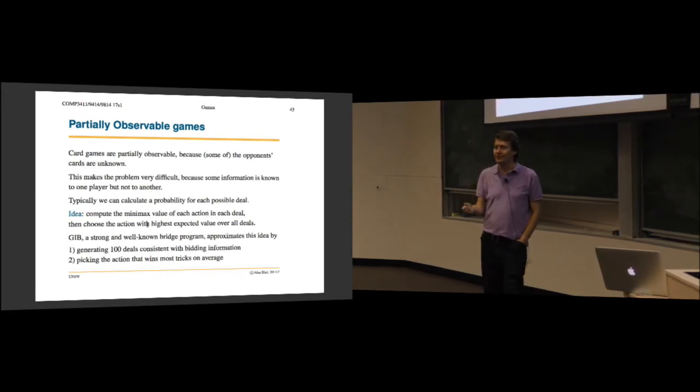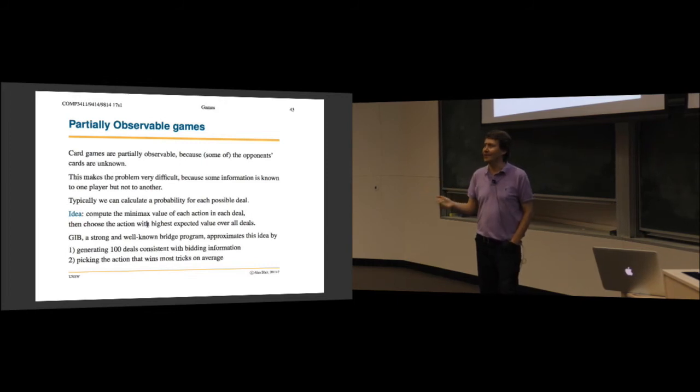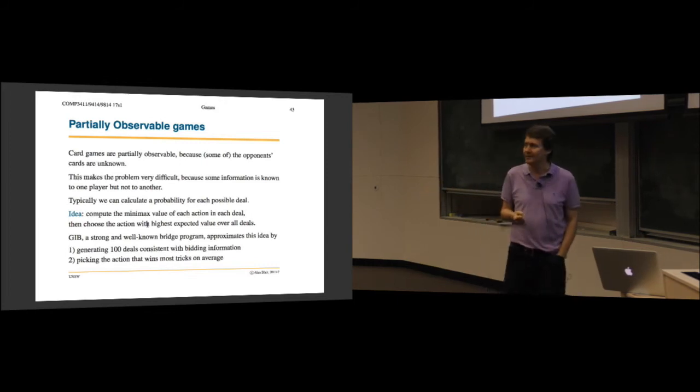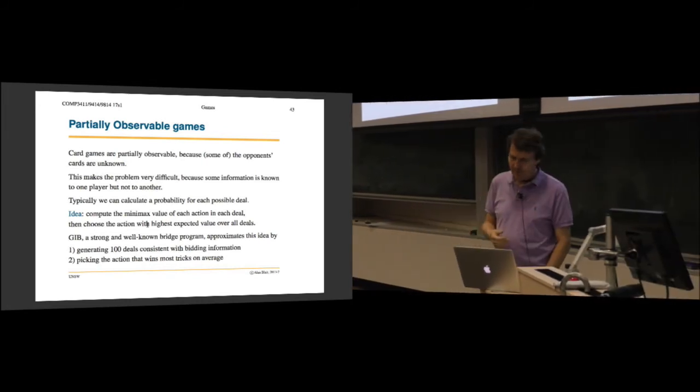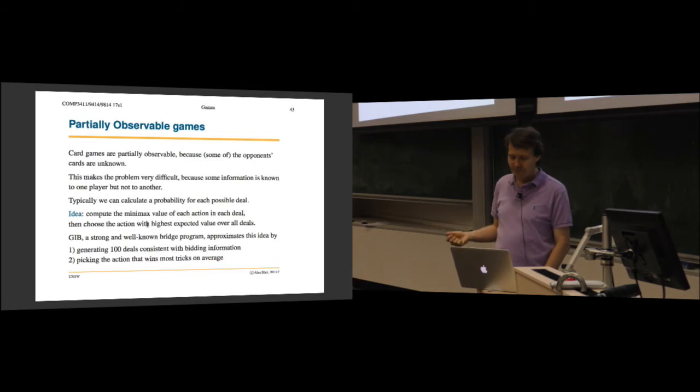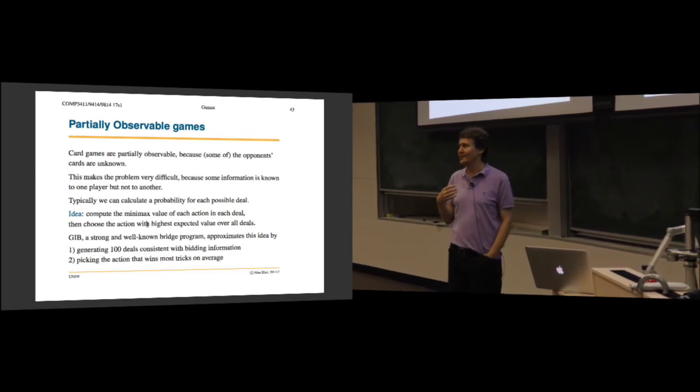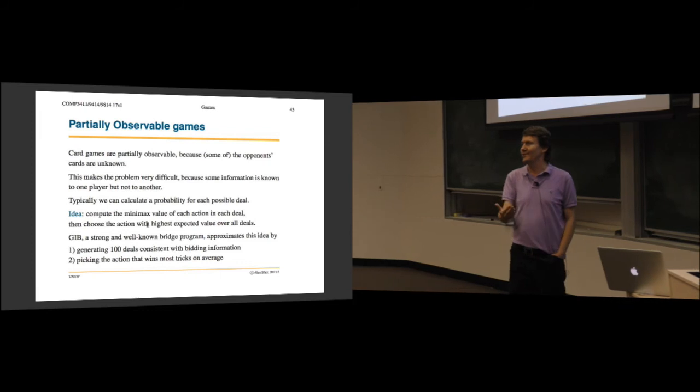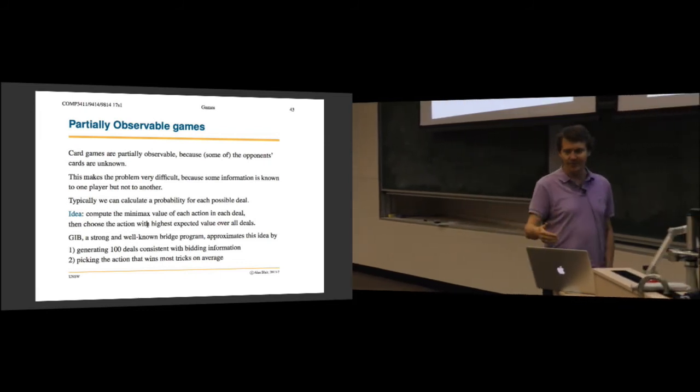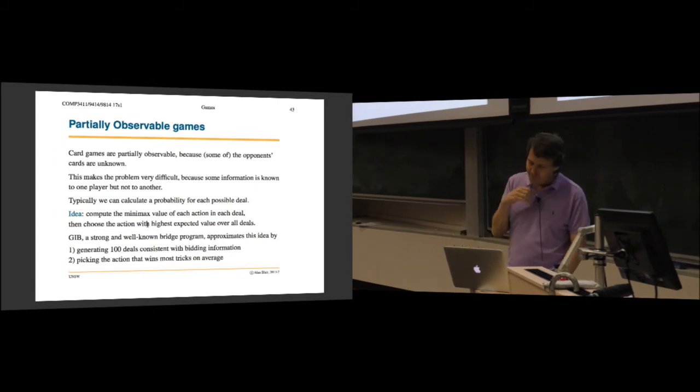There was a program called GIB, which for many years was the best bridge-playing program. And the way it worked was as follows. It has information about what bids people have made and what cards people have already played. And on that basis, it tries to guess what cards the other person has in their hand or the other people have in their hands. And it kind of randomly generates a possible set of cards that the other people could have. And it says, well, if that were the case, what move would I make? And then it does it again. Let's generate another set of cards which is consistent with the information that I've already seen. So it generates a hundred such possibilities. For each possibility, it decides what would be its best move to make. And then it kind of votes among those hundred, what's the most popular move?